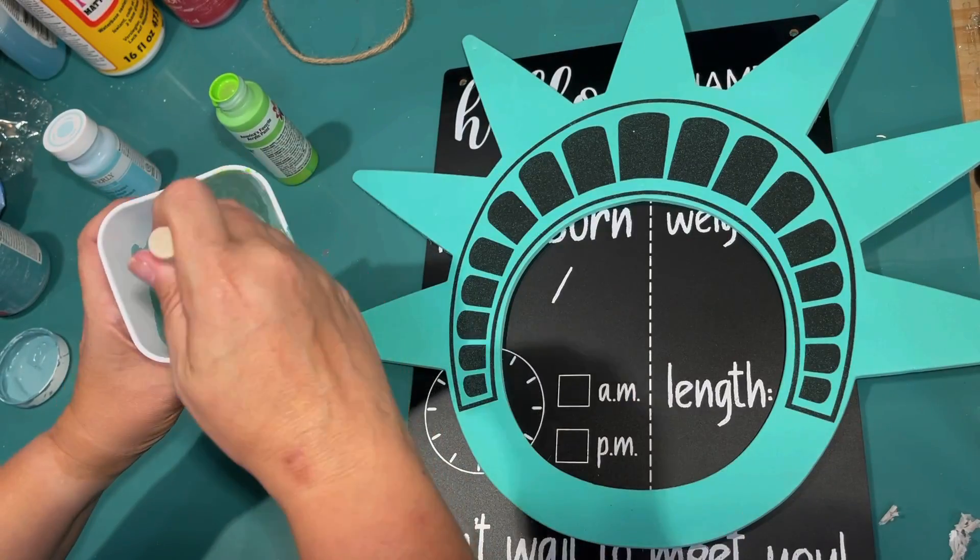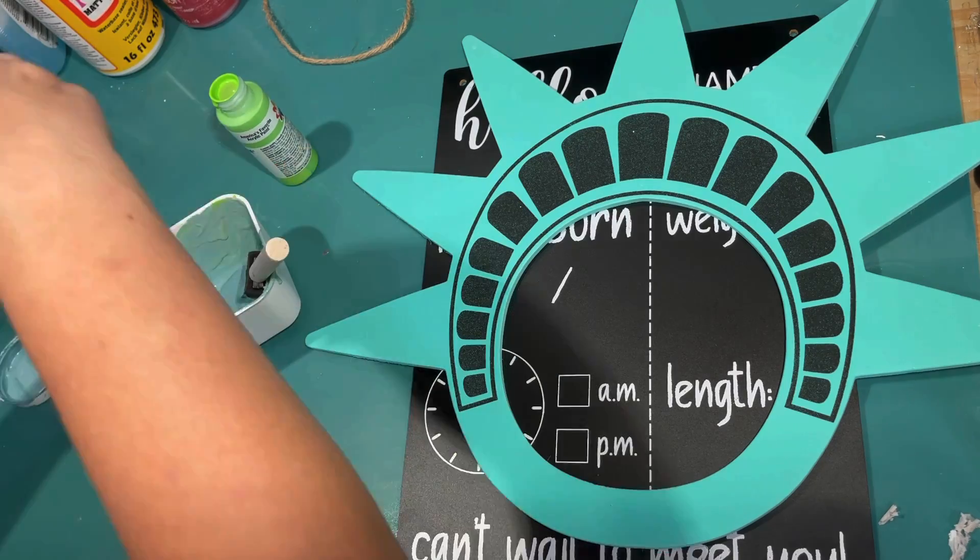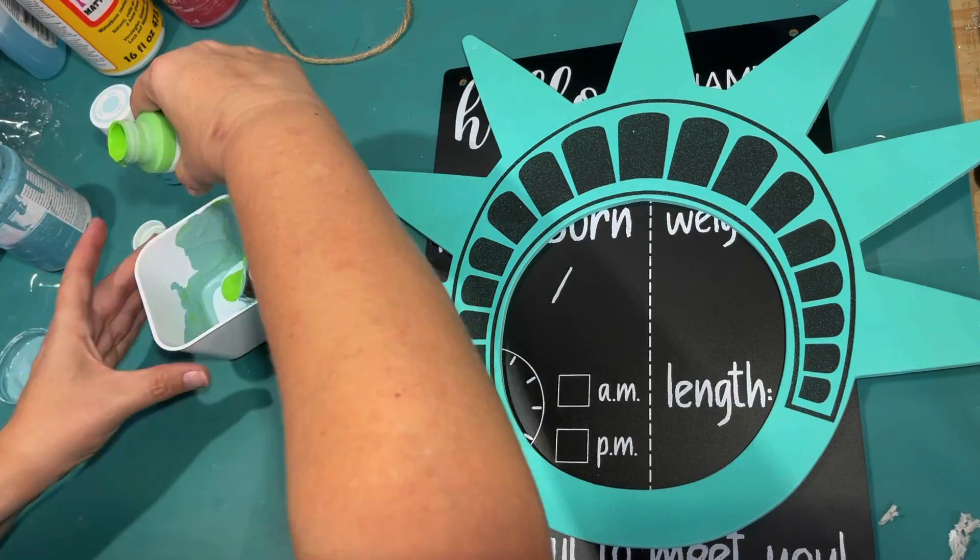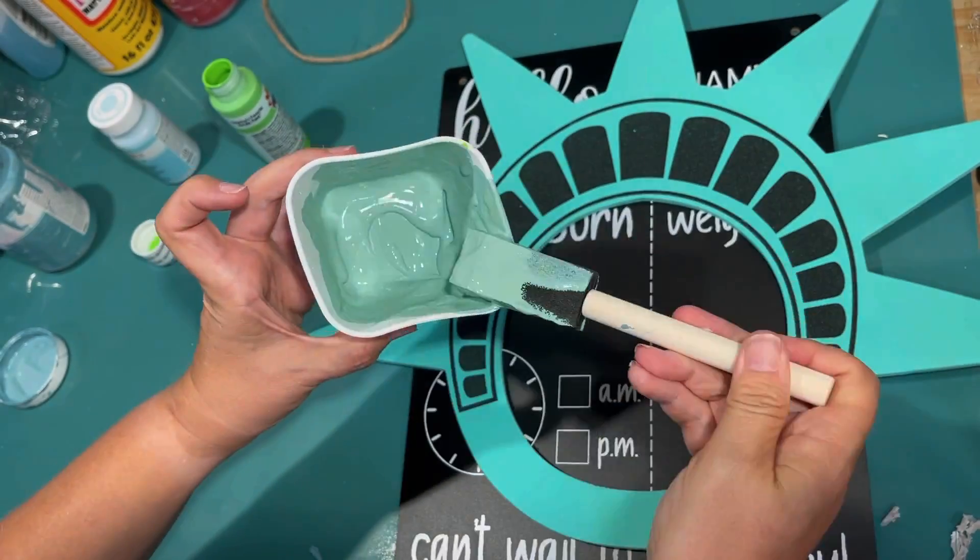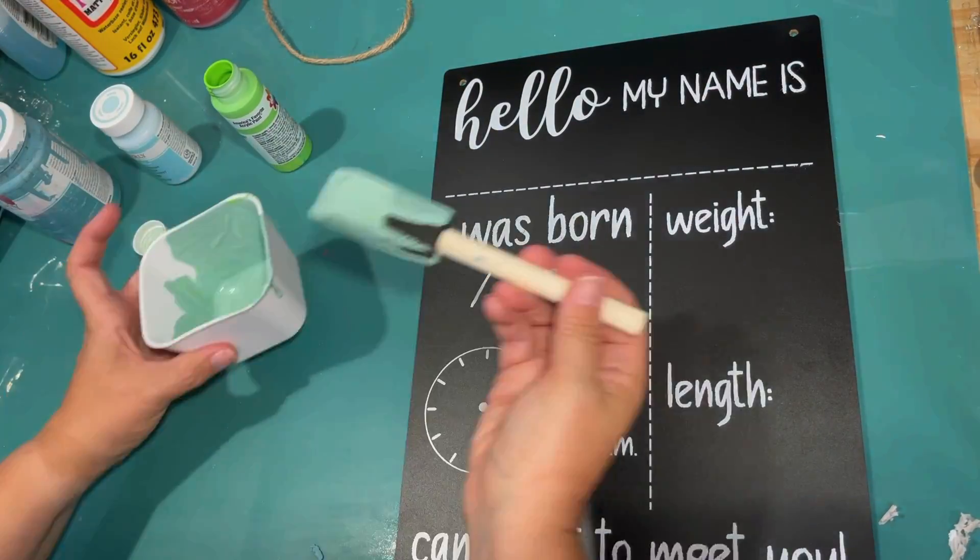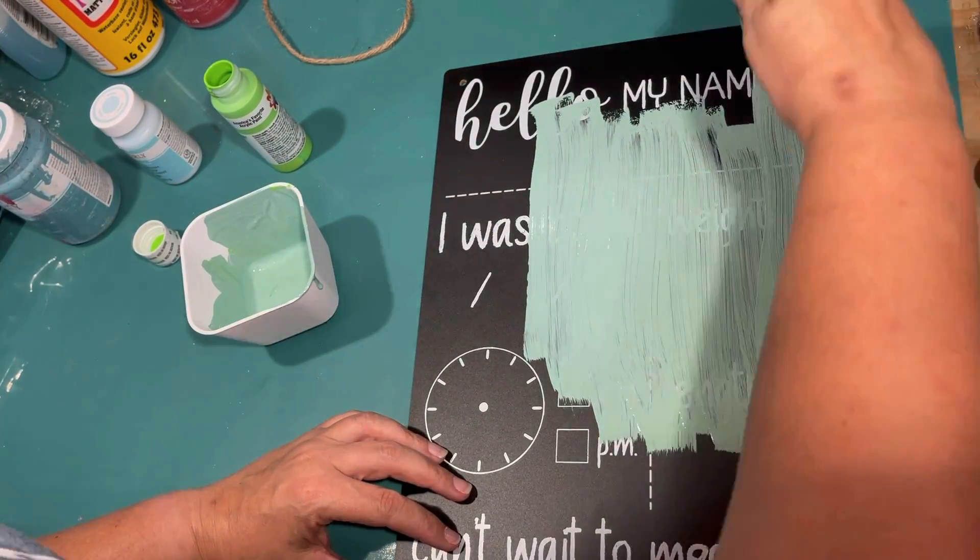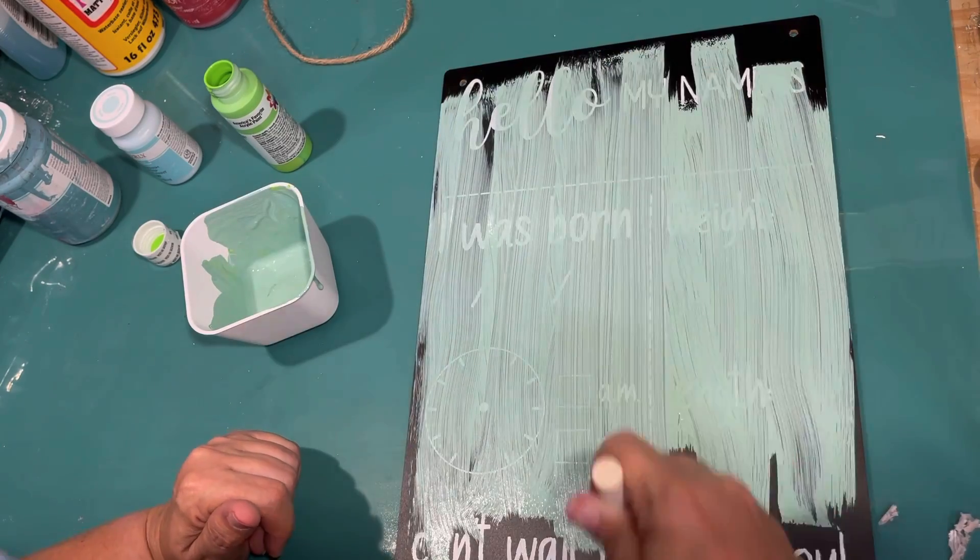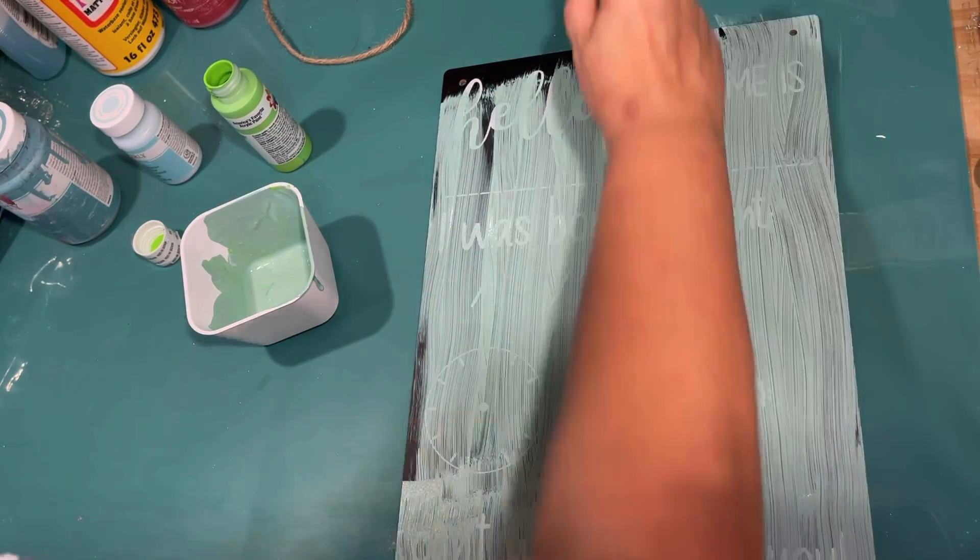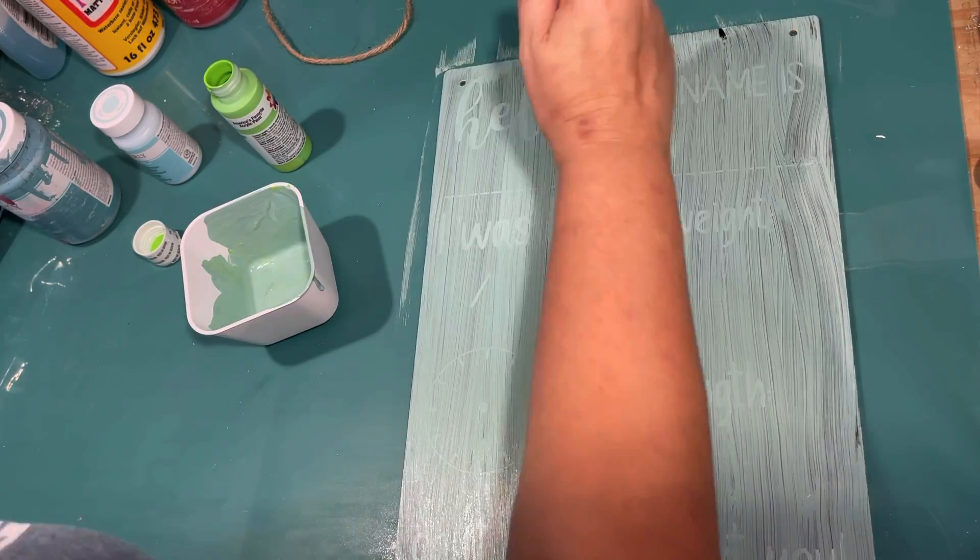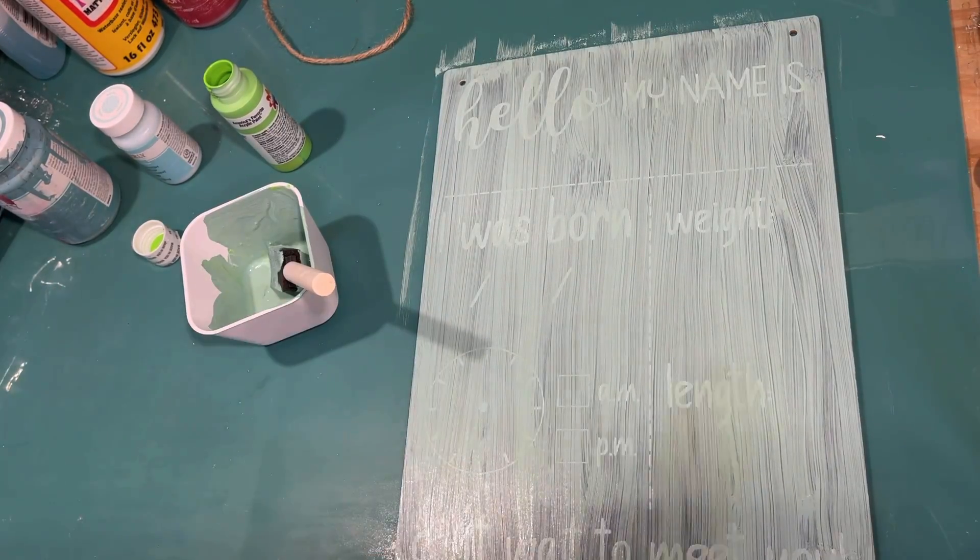So I was inspired by this Statue of Liberty hat that I got at the Dollar Tree. And so I'm trying to match that color of the Statue of Liberty. So I just used agave pool, I think, on the chalk paint. And then I actually wanted some more green to that, so I mixed in a little acrylic of the green, trying to go for that custom color.